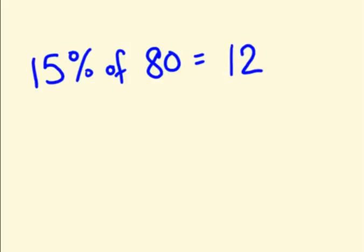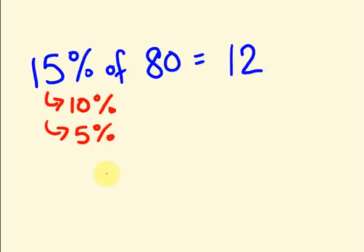Now let us see for the same question: 15 percent of 80. First I can calculate 10 percent, which is easier. Then I can calculate 5 percent. By adding these 2 percentages, we will get 15 percent. So 10 percent of 80 — we move the decimal point from right to left, so it is 8. Then half of 8 is 4. Now add those two: 10 percent plus 5 percent is 15 percent. So 8 plus 4 is 12. That is the answer.